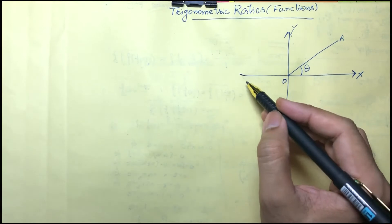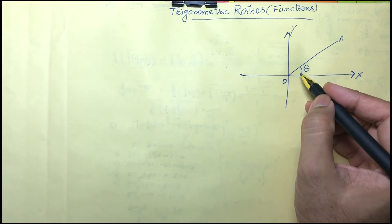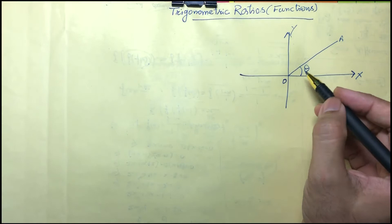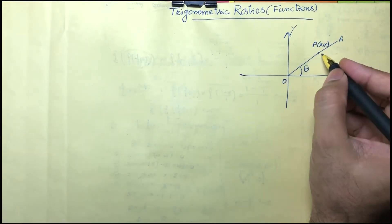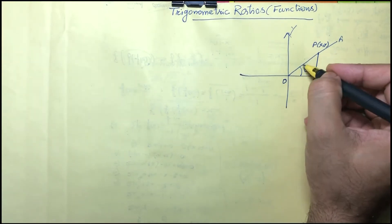For this we let the xy plane with OX as initial axis, and let theta be the angle with terminal side OA, where theta is measured in radians. Let there be a point P lying on OA, and draw a perpendicular from P to the x-axis, naming it Q, where the length OP is R.